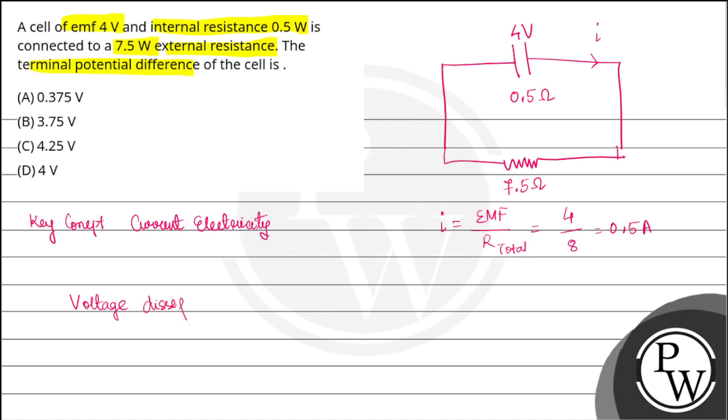Voltage dissipation inside the battery will be 0.5 amperes into 0.5 ohms, that is 0.25 volts.